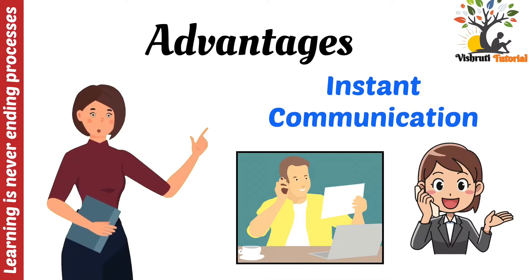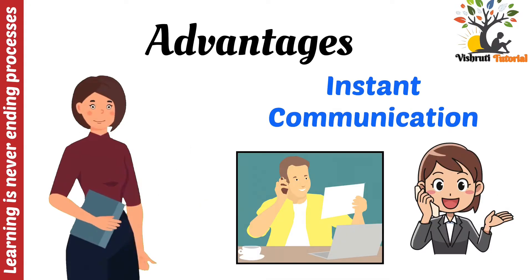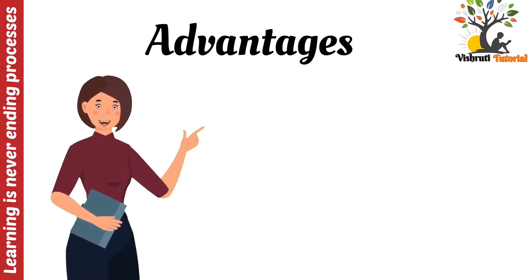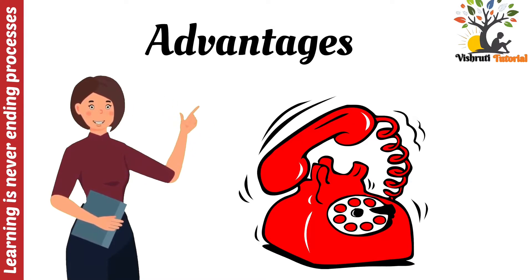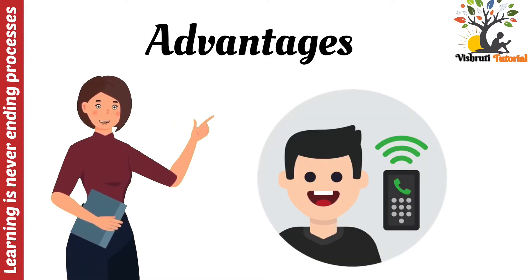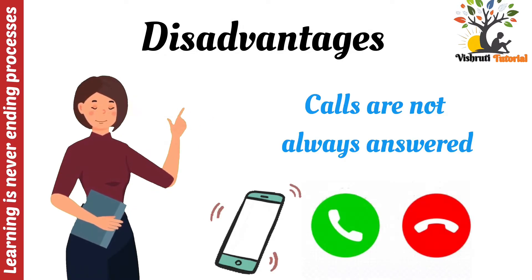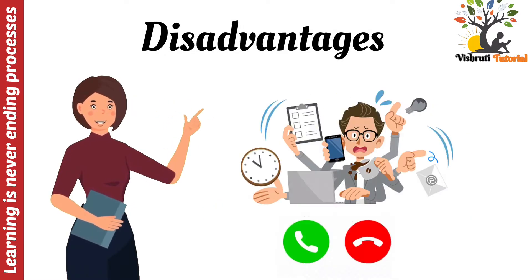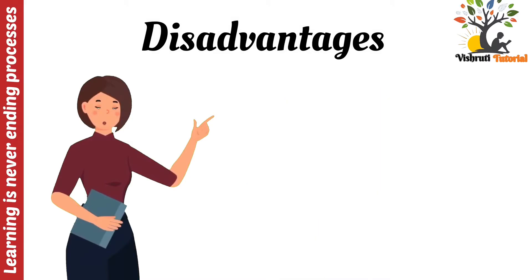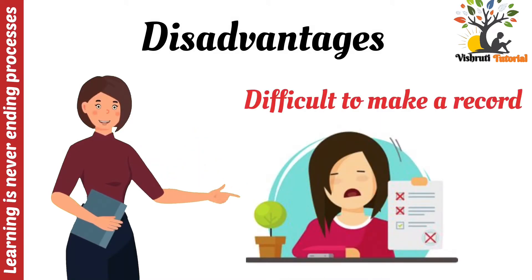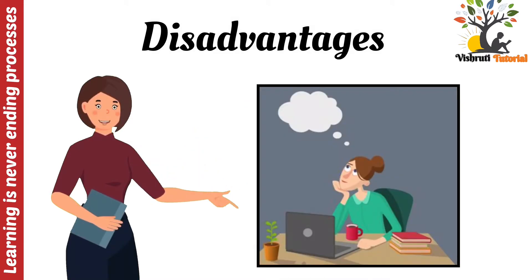Next is telephone. The advantages of a telephone: it is instant communication, and most people have a telephone, either a landline or a mobile. The disadvantages: calls are not always answered, and it is difficult to make a record of phone discussions.